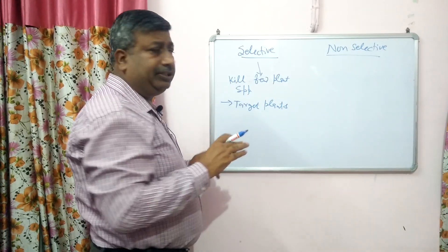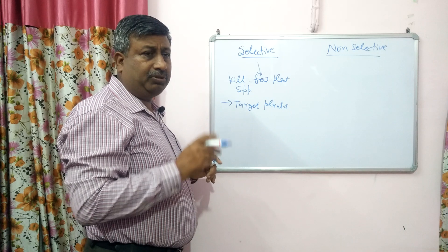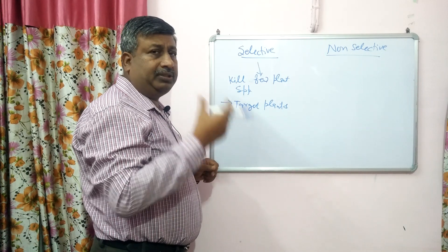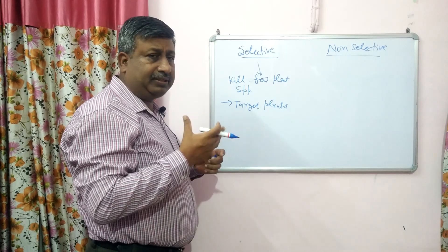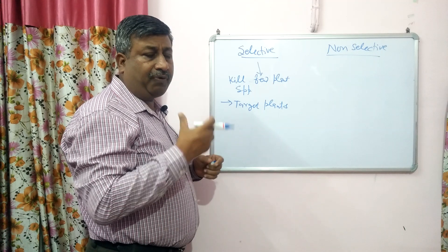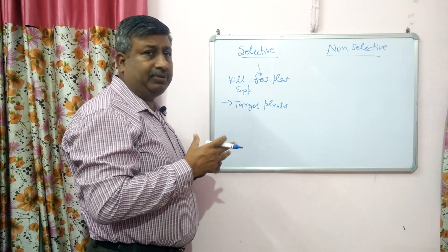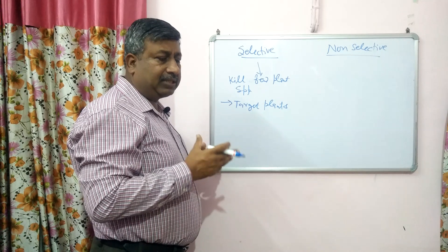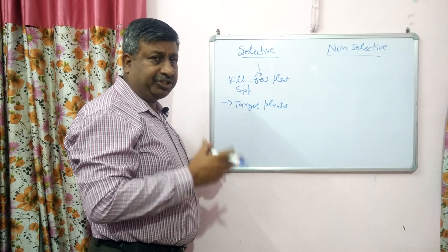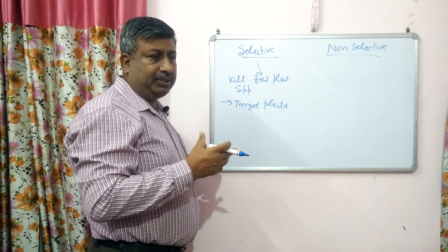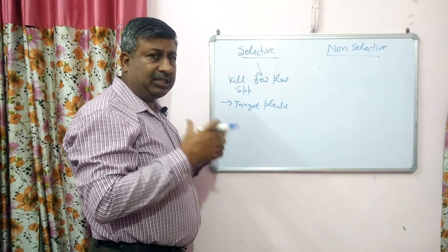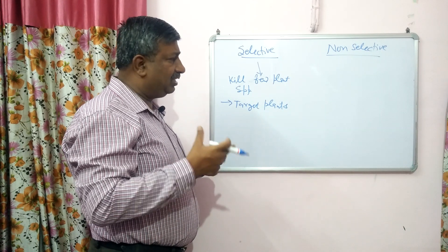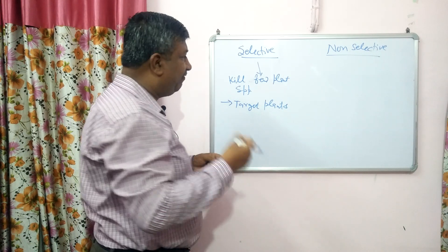These herbicides do not kill all species. There are only a few species which are killed by such type of herbicide. So they have selection for the killing — we can say there is a selective mode of action. There is selective action, so some are alive, there is no effect on some species, and some species are adversely affected or killed.